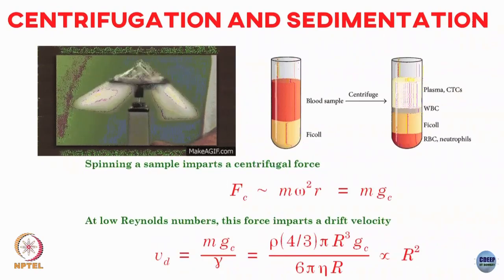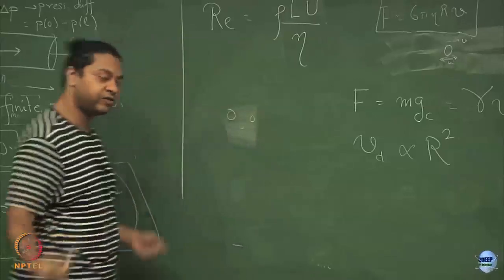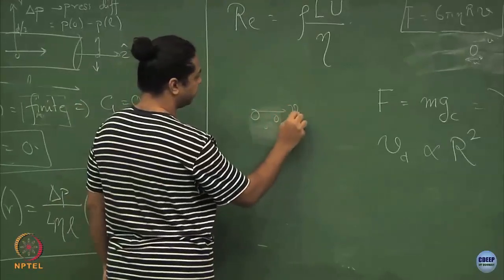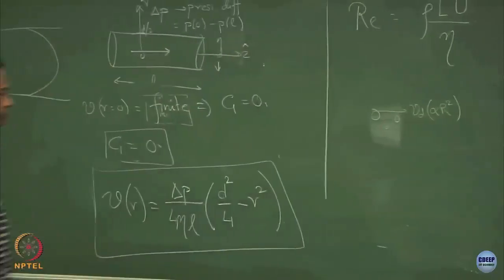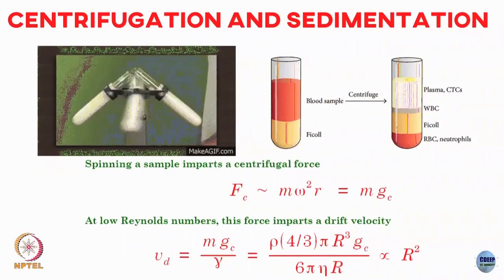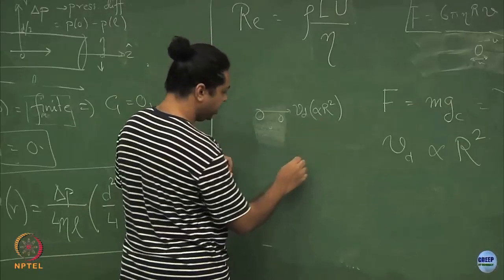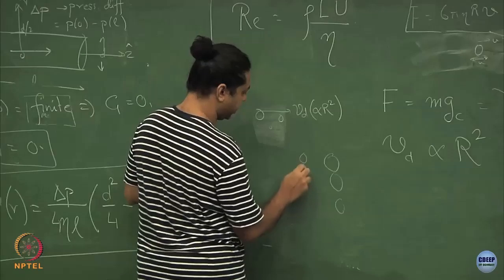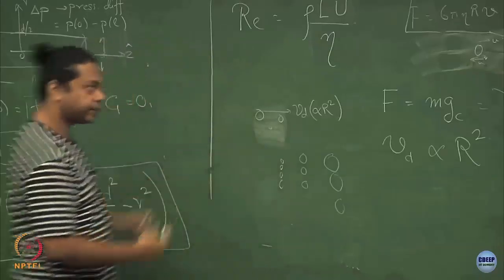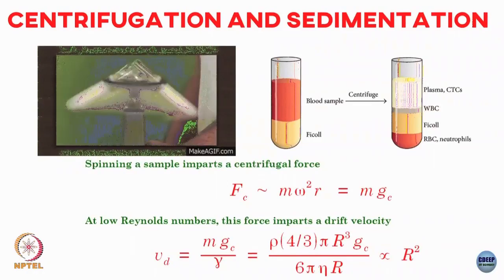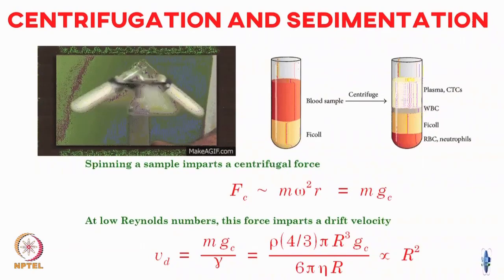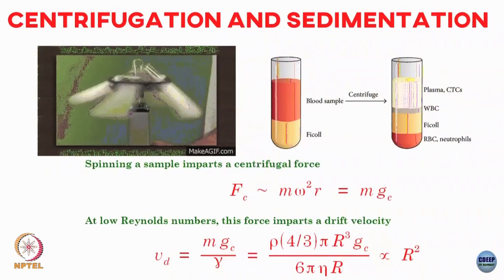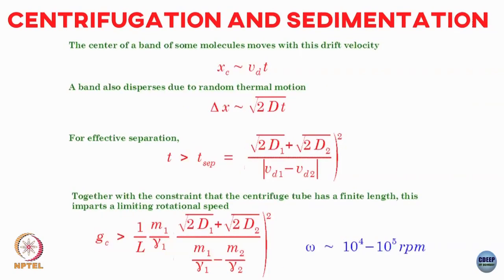If you have a suspension with particles of different sizes, each particle will have a different drift velocity proportional to r². Starting from an initial homogeneous mixture with large, medium, and small particles, each will move with a different velocity v_d proportional to r². However, these particles are also undergoing diffusive random walks, which causes the separated bands to smear out. The center of a band moves with v_d·t, but the band also disperses as √t due to diffusion.